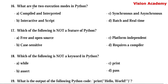Question number 16. What are the two execution modes in Python? Option A: compiled and interpreted. Option B: interactive and script. Option C: synchronous and asynchronous. Option D: batch and real-time. There are two modes of execution in Python — interactive and script mode. Hence, option B is the right answer.